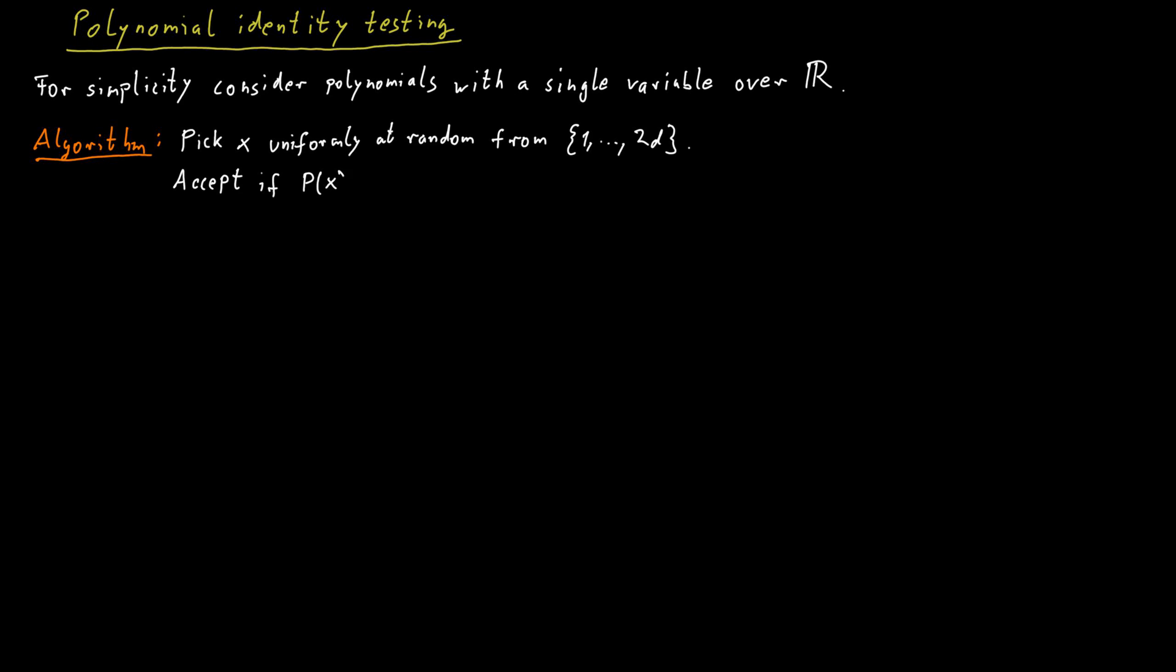Firstly, we need to be able to pick a random integer between 1 and 2d. But if we think about it for a little bit, we realize that this can be done quite easily in polynomial time. We need log d bits to identify such a random integer because we just encode that integer in binary.